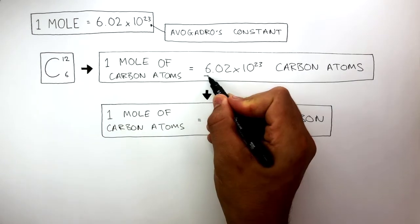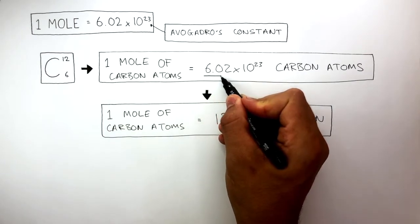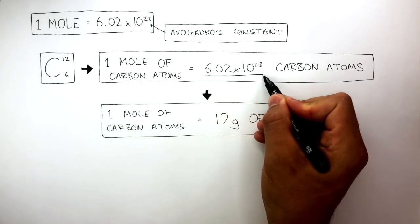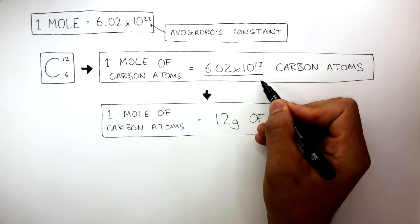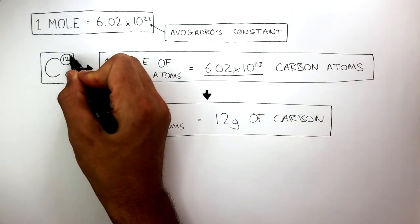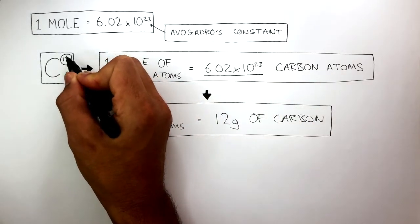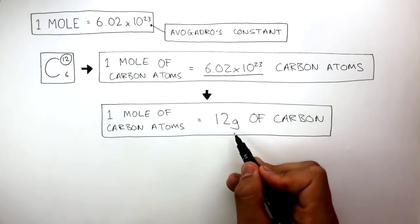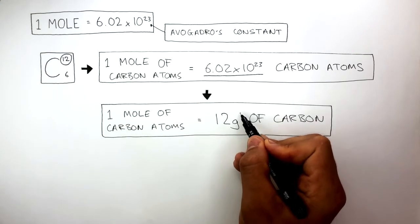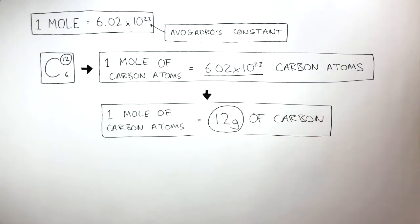When you have 6.02 times 10 to the power of 23 carbon atoms, which is 1 mole of carbon atoms, the relative atomic mass of carbon, which is 12, can be expressed in grams. So the mass of 1 mole of carbon atoms is 12 grams, because the relative atomic mass is 12.